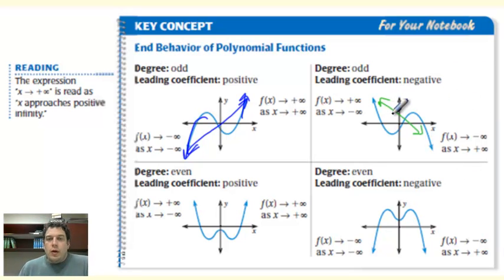And we change up, then, what f of x and x are doing as we improve. Now, even degree polynomials, either both go up or both go down. Both go up if the leading coefficient is positive.